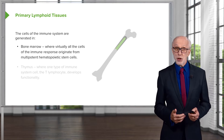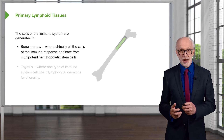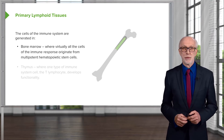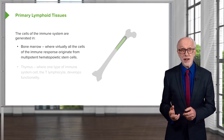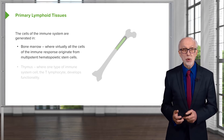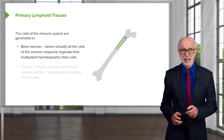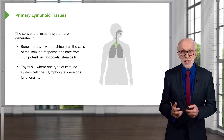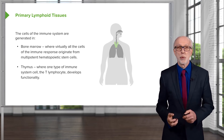The lymphoid tissues can be divided into two different types: the primary lymphoid tissues and the secondary lymphoid tissues. The primary lymphoid tissues are where the cells of the immune system are actually generated. They comprise the bone marrow, where virtually all the cells of the immune response originate from what are called multipotent hematopoietic stem cells. The other type of primary lymphoid tissue is the thymus, a very specialized tissue where one particular type of immune system cell, the T lymphocyte, develops its functionality.